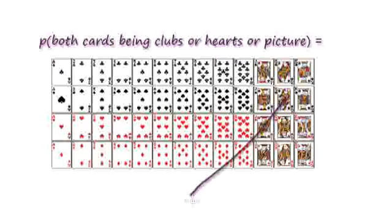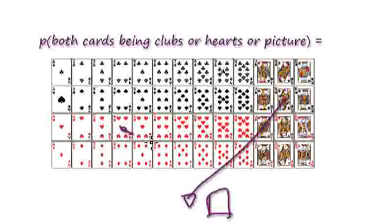For example, if we pick out this card here and this card here —